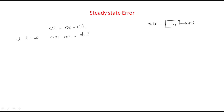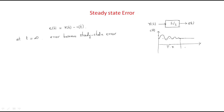Why is it called steady state error? Generally, for a system, the output c(t) has oscillations initially. After some time it doesn't have any oscillations — up to that period is called the transient state. After that is called the steady state, which starts from t equal to infinite. The error becomes the steady state error whenever t reaches infinite.